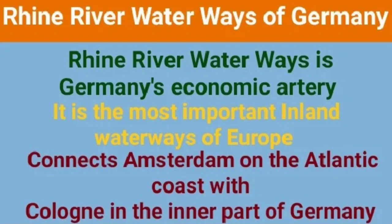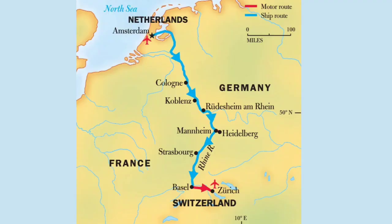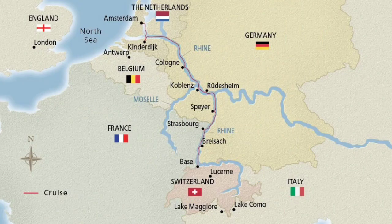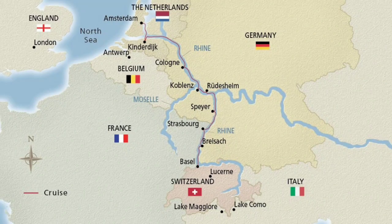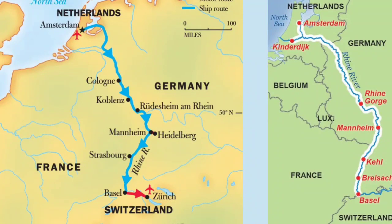Among the inland waterways, the Rhine River waterway in Germany is an important waterway and acts as the economic lifeline of Germany. It is the most important inland waterway of Europe. It connects Amsterdam on the Atlantic coast with the Ruhr industrial region of Germany. The Rhine River waterway is navigable for ocean liners up to Cologne, which is an important river port in the inner part of Germany.